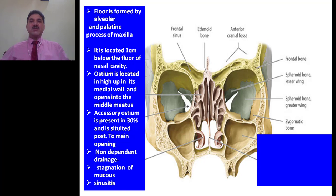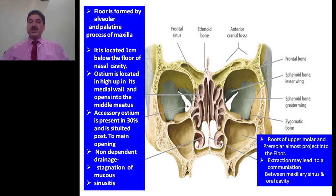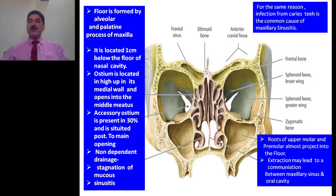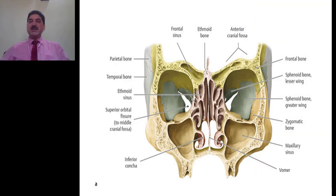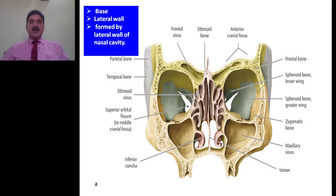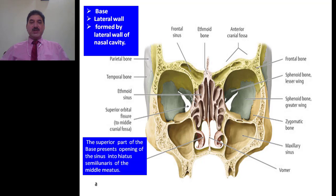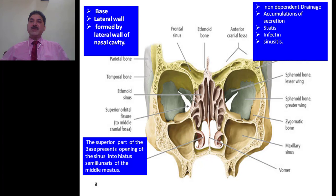Infection of the maxillary sinus is called maxillary sinusitis. In fact, the maxillary sinus is the commonest sinus involved in sinusitis. Roots of upper molar and premolar teeth almost project into the floor of the maxillary sinus, so extraction may lead to a communication between the maxillary sinus and oral cavity. For the same reason, infection from carious teeth is a common cause of maxillary sinusitis. The base of the maxillary sinus is formed by the lateral wall of the nasal cavity; the superior part presents the opening of the sinus into the hiatus semilunaris of the middle meatus. Due to non-dependent drainage, accumulation of secretion leads to stasis, which in turn leads to infection and sinusitis.